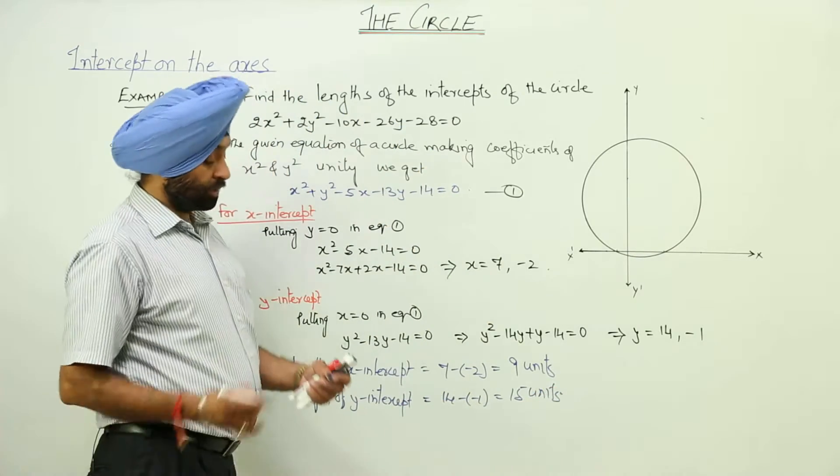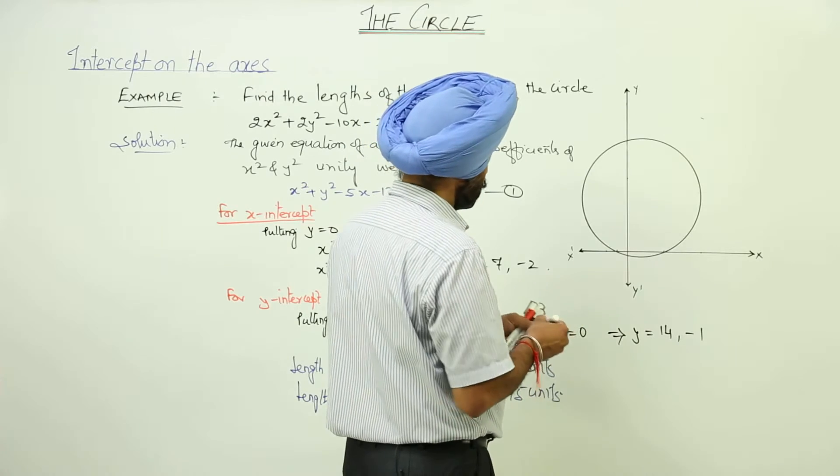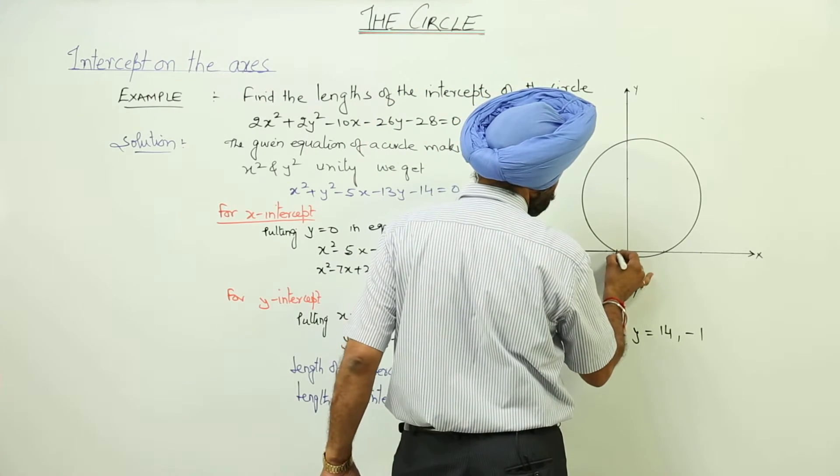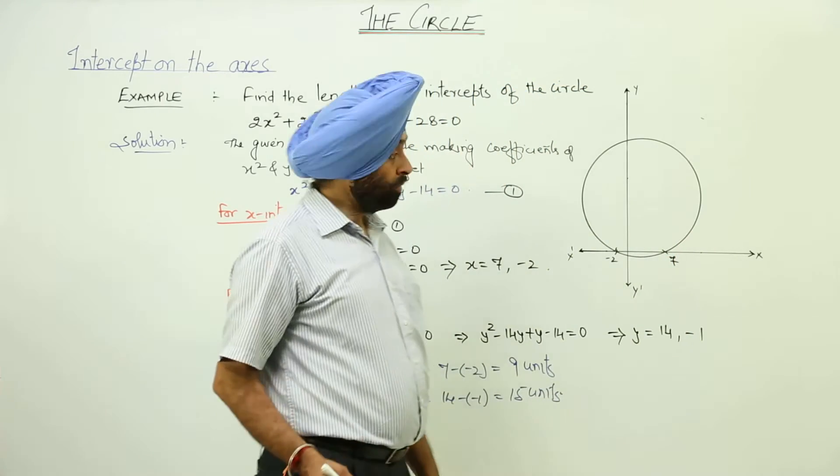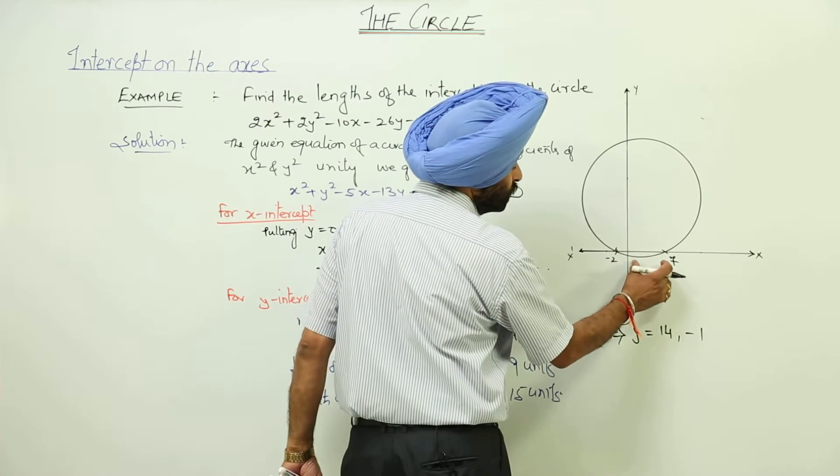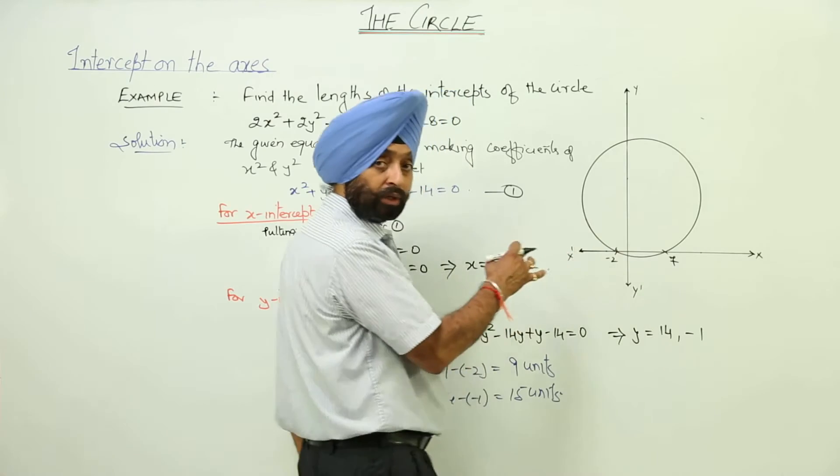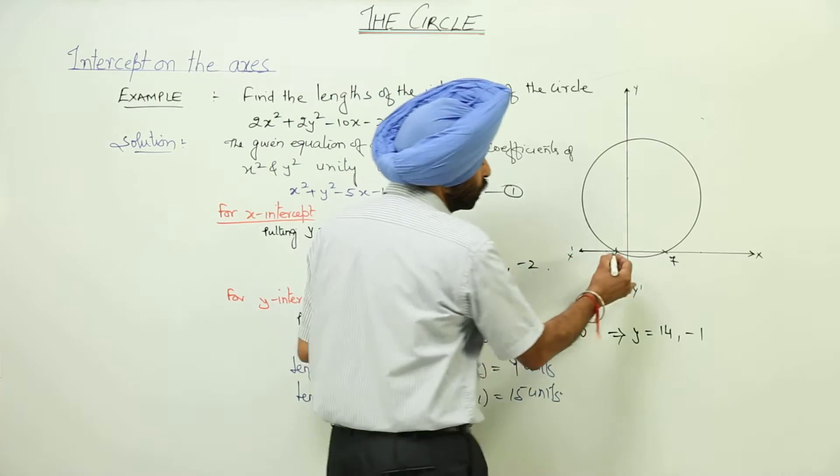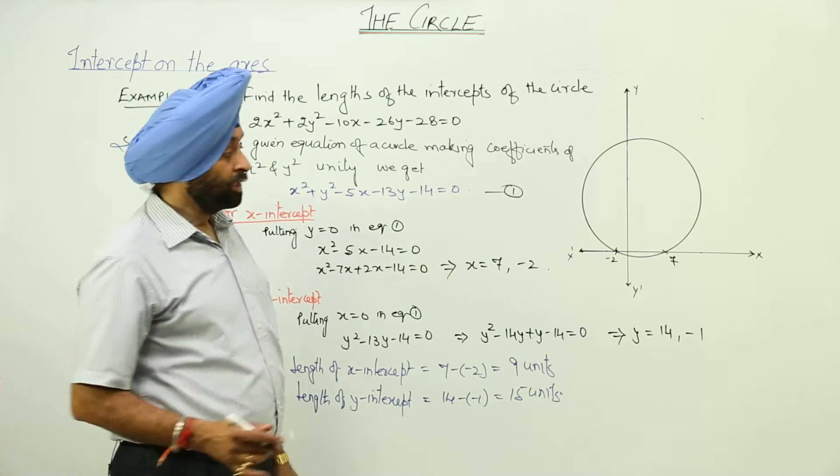Now, what I have done? Just look here. We have got suppose this point, this is negative 2 and this is 7. So length of x intercepts means what? 7 units towards the right side and 2 units towards the left side of the x axis. So total length from here to here it becomes 9 units.